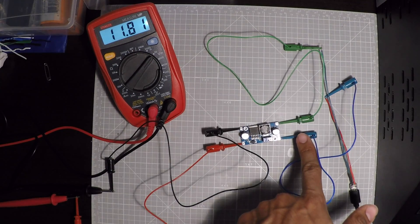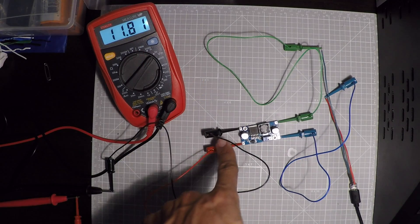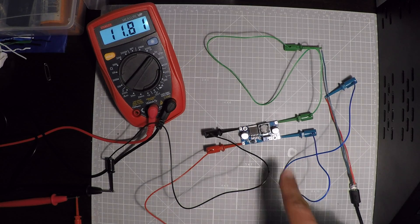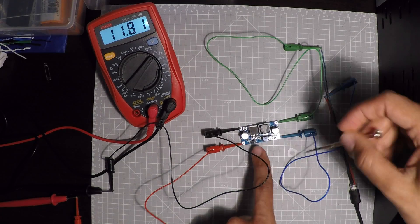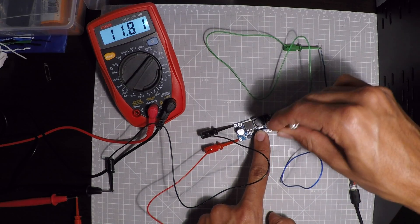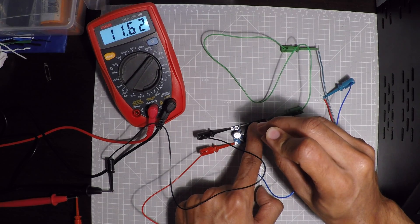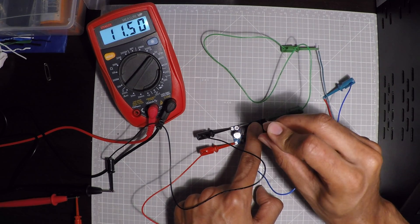We originally have 5 volts here, and now we have 11.8 volts coming out on this end. To adjust the voltage, there's a little screw here. We can take a screwdriver, and as you turn it, you can see the voltage changing.